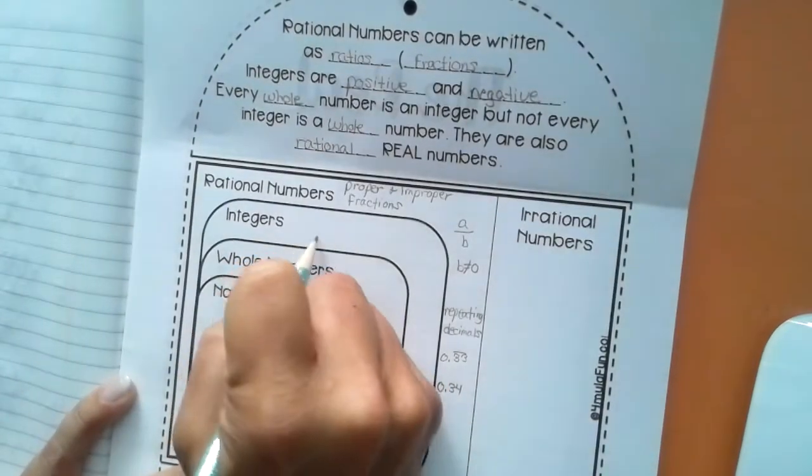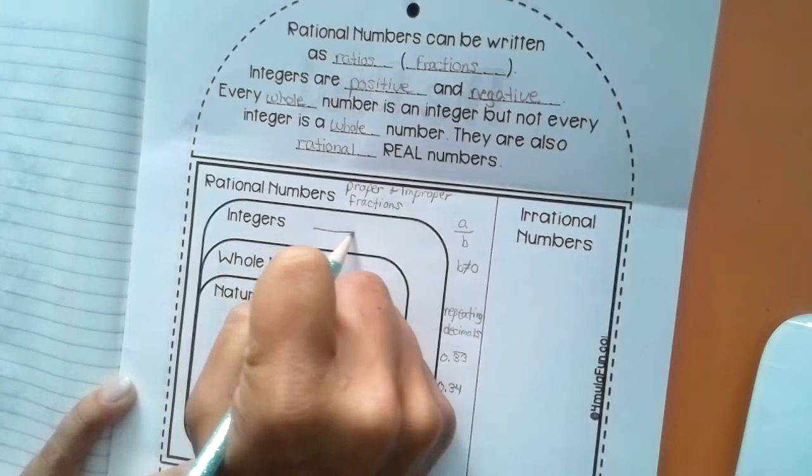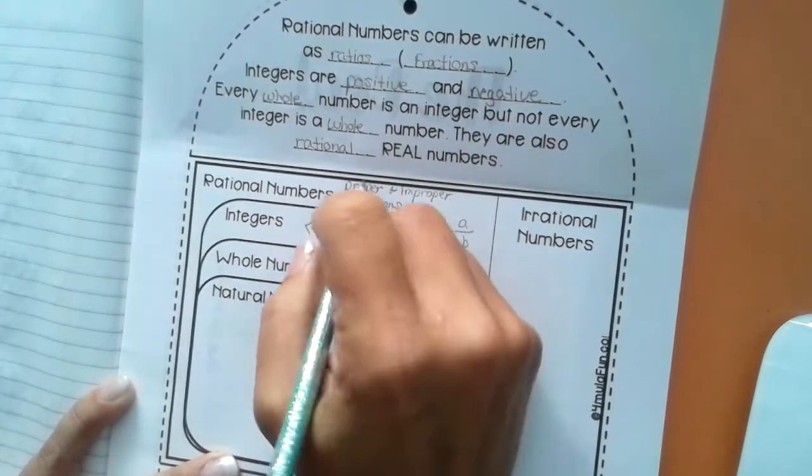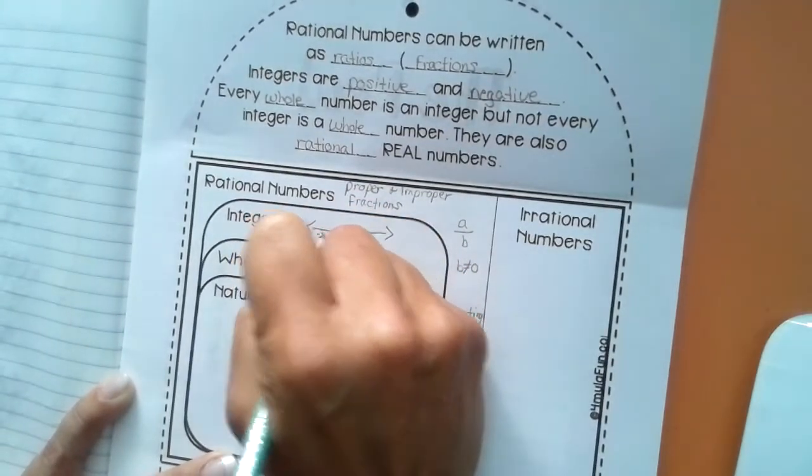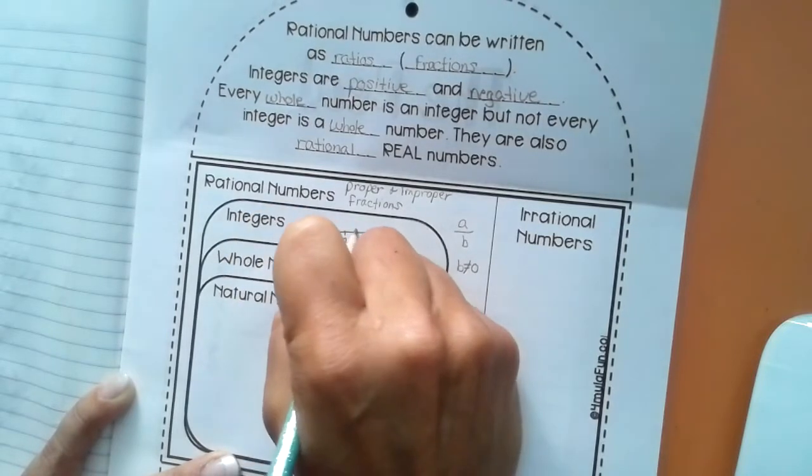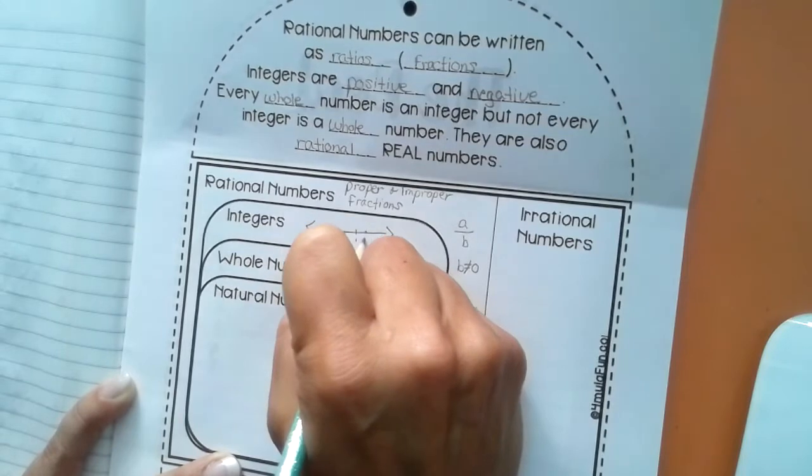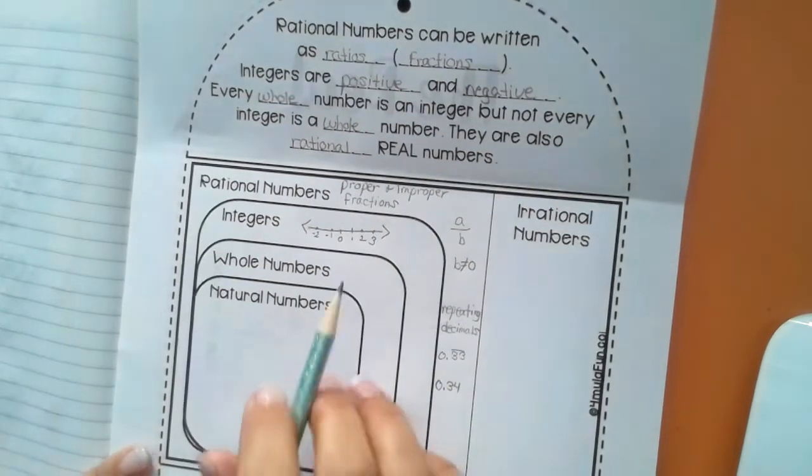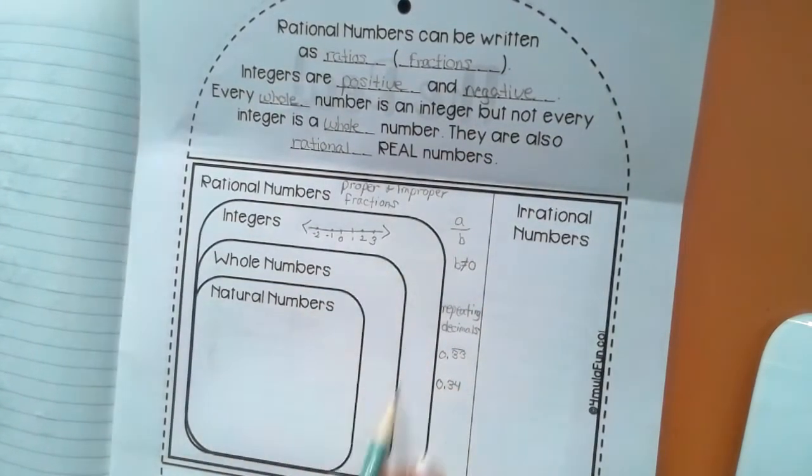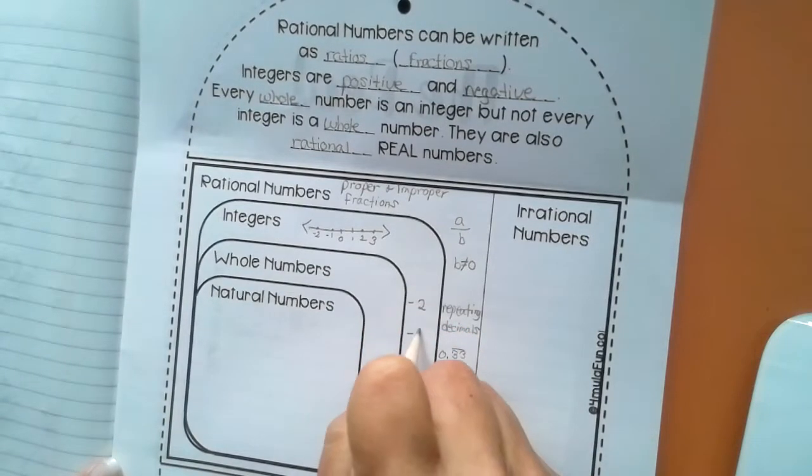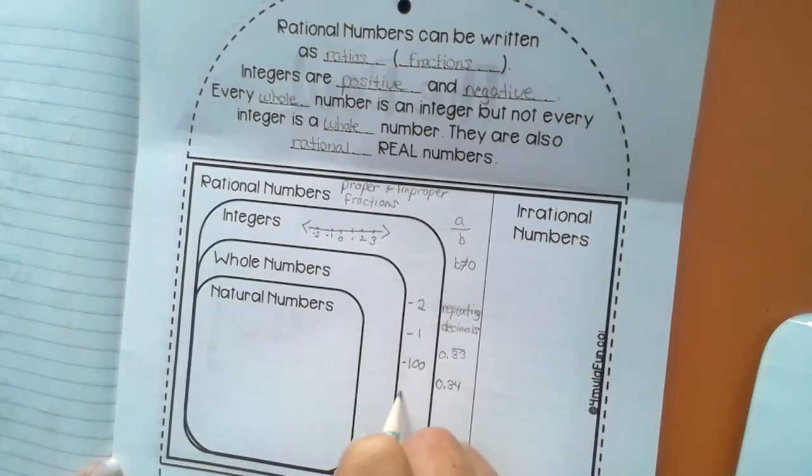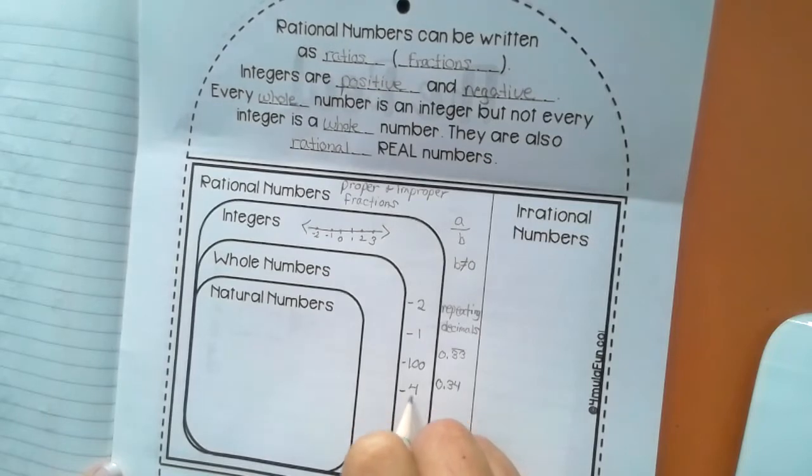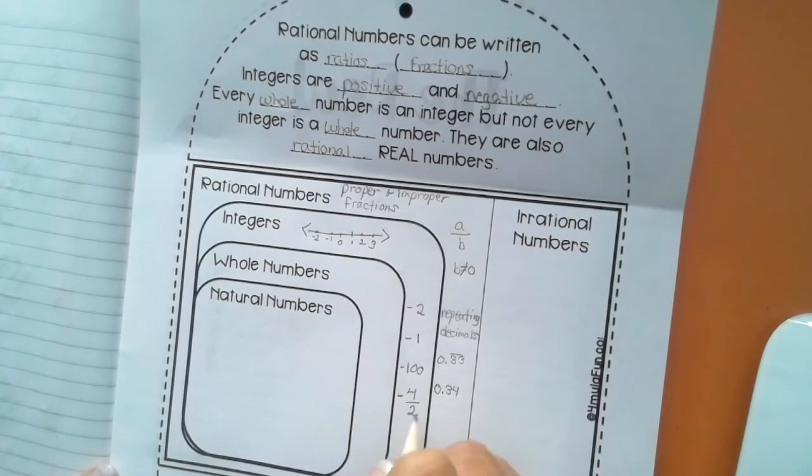Integers are any number positive or negative. I'm just going to do a number line here. Positive or negative, but remember we, these are subsets. So even though these are an example, we like to think of what is the better choice. So over here, I'm going to put some better choices for integers. And negative 4 over 2 because that would be a negative 2.